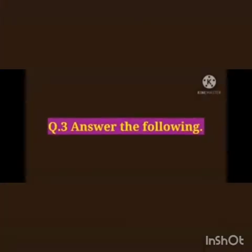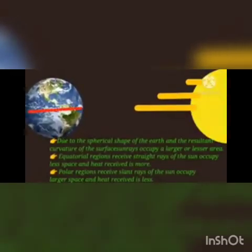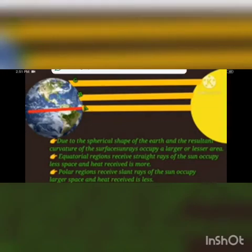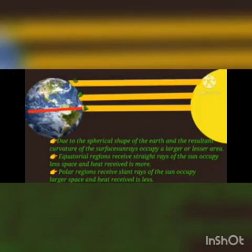Question number 3. Answer the following. First question: Explain with a diagram the effect of the spherical shape of the earth on the temperature at different latitudes. Answer: Due to the spherical shape of the earth and the resultant curvature of the surface, sun rays occupy a larger or lesser area. Equatorial regions receive straight rays of the sun, occupy less space, and heat received is more.